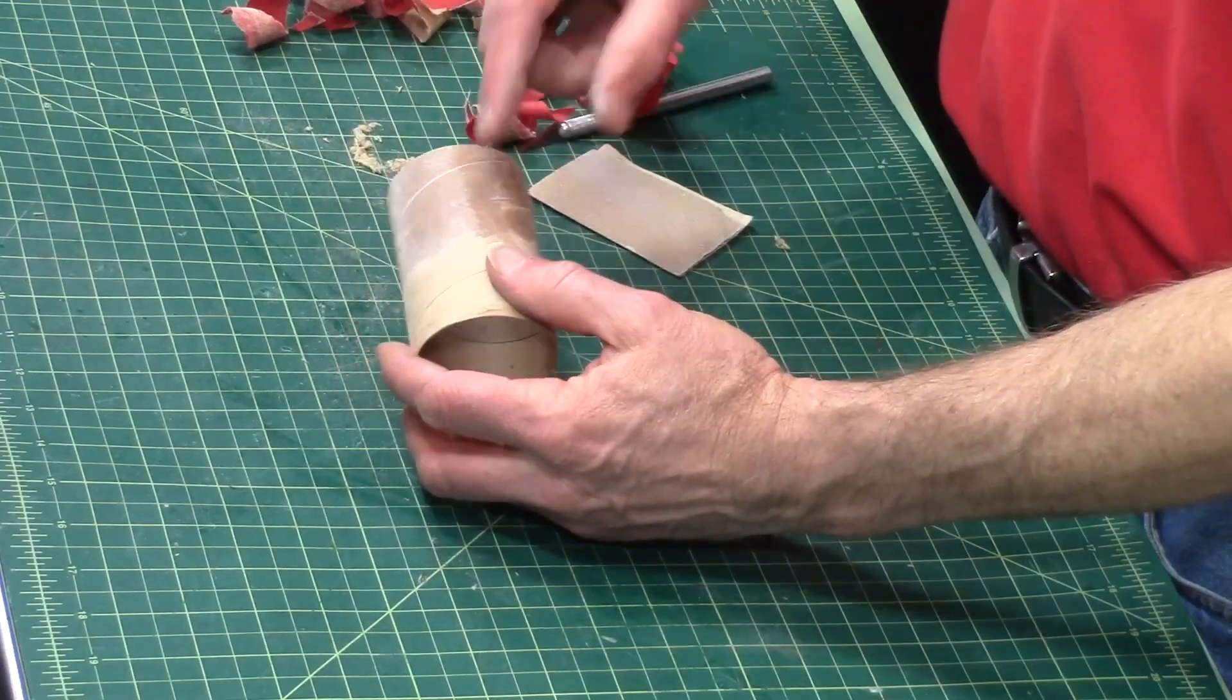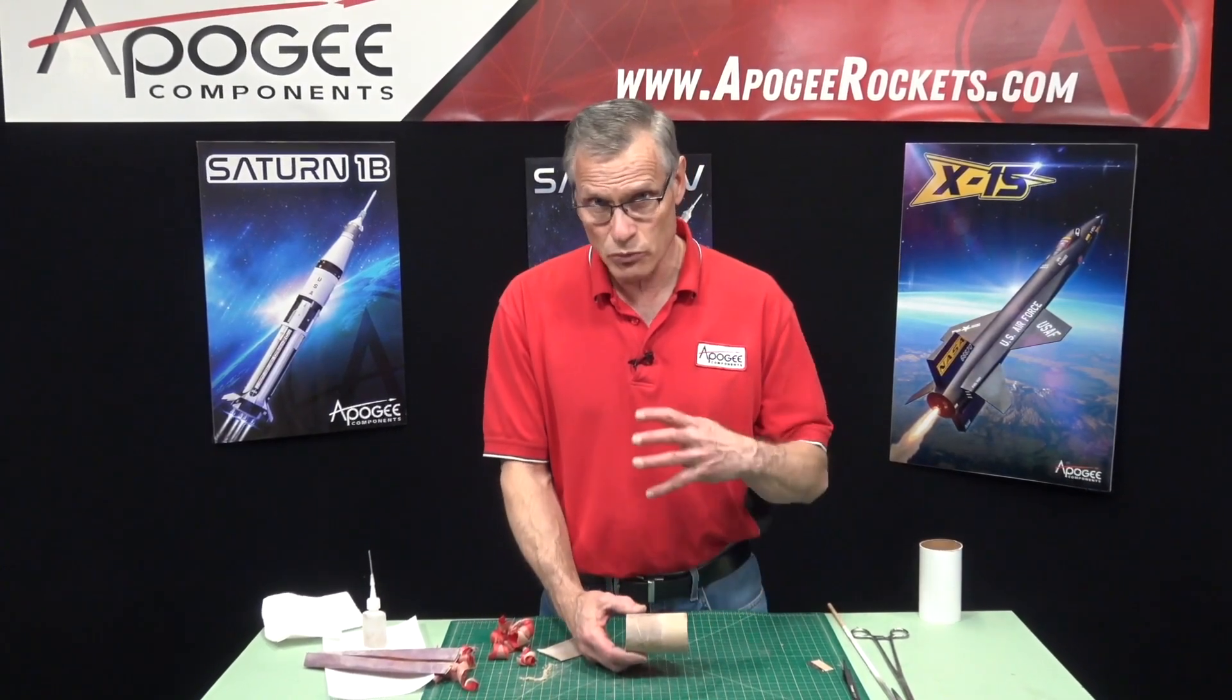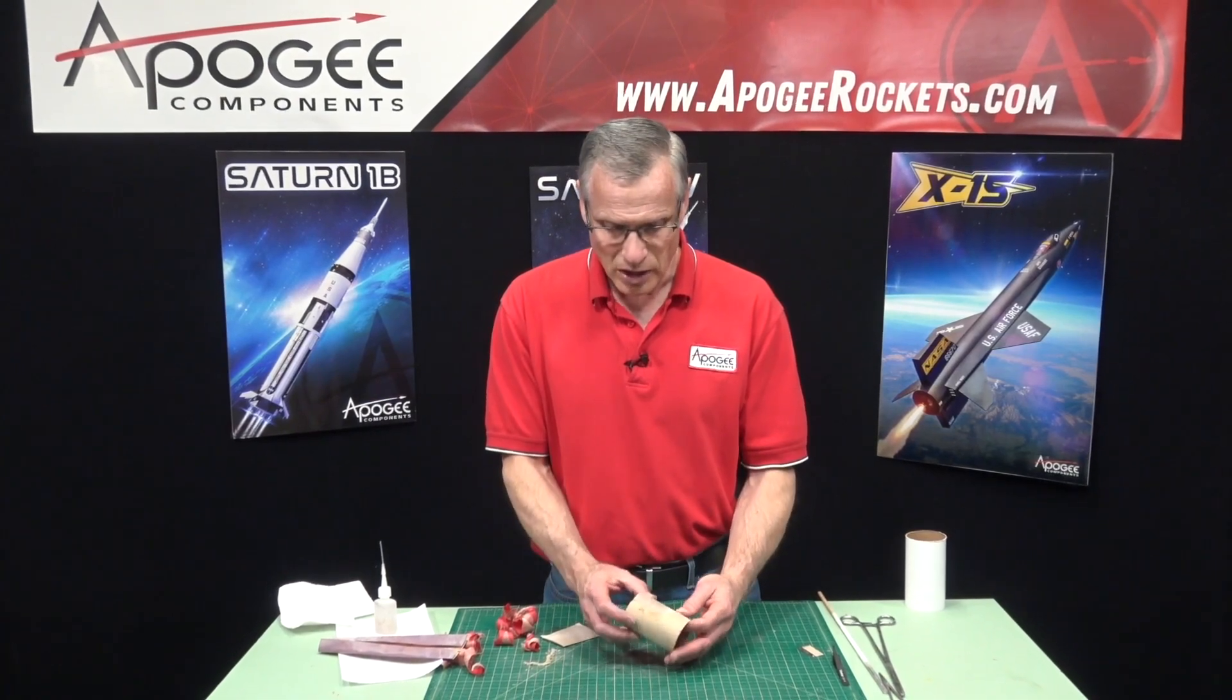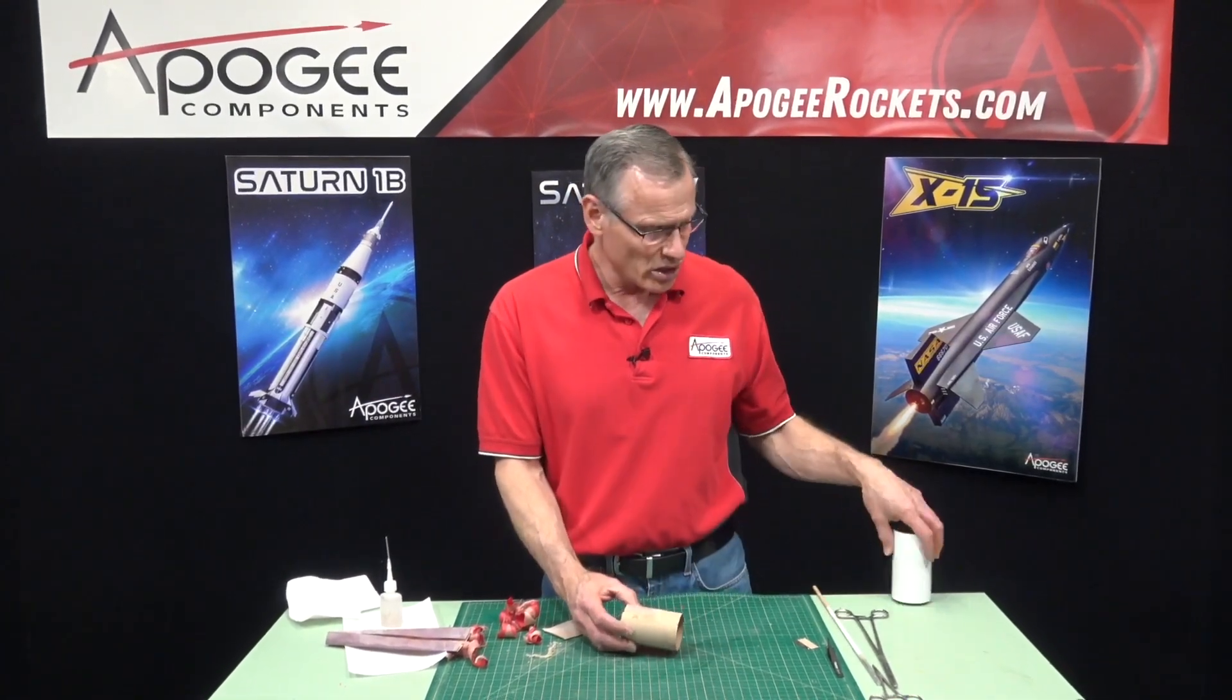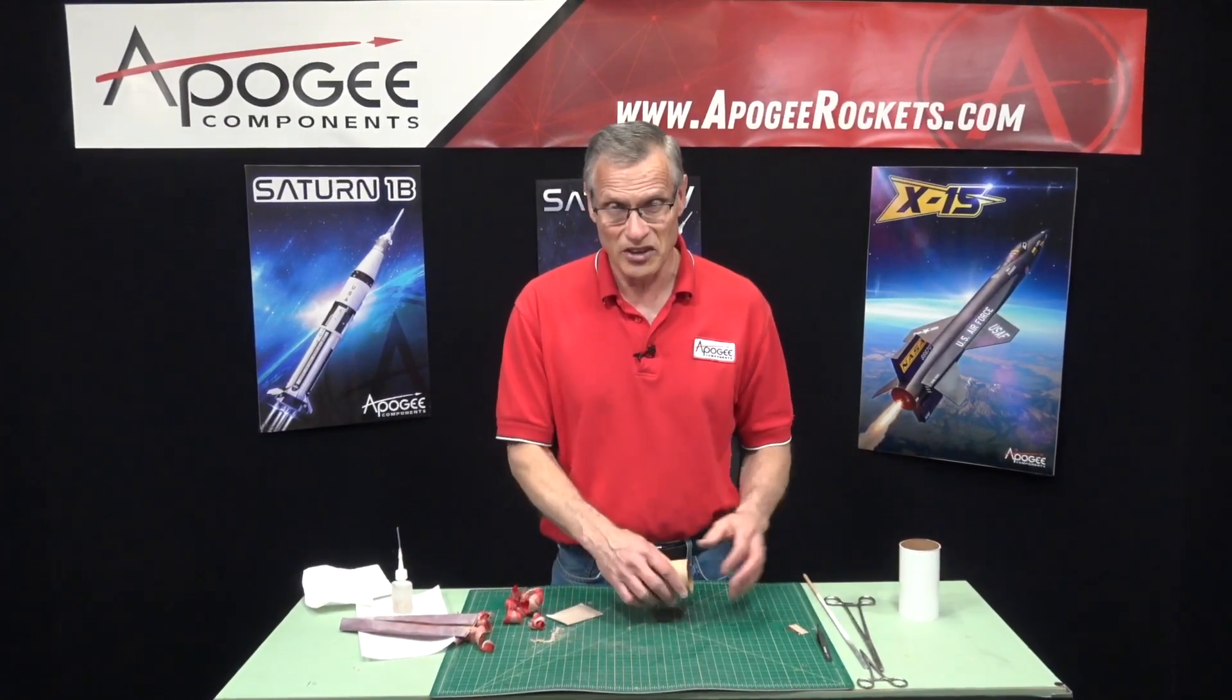So that is the process of peeling the outside layer of a tube off, and this is really good, particularly for tube couplers. And there's a different technique for peeling out the inside, and I'll show you that in another video.